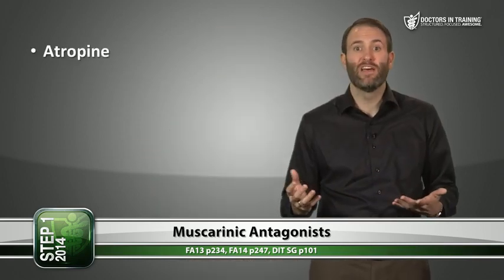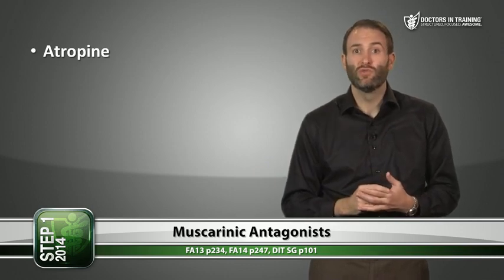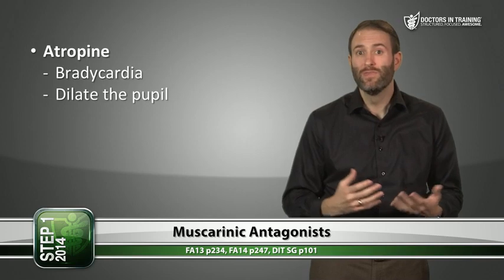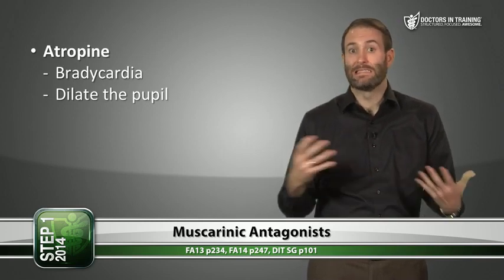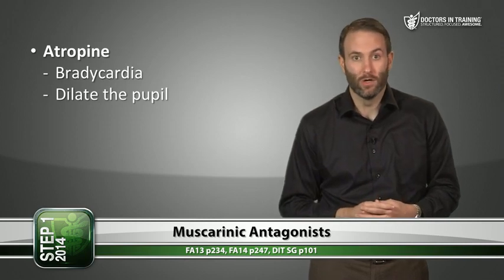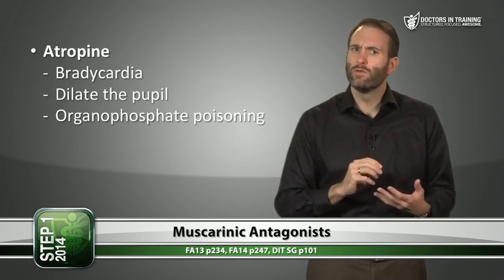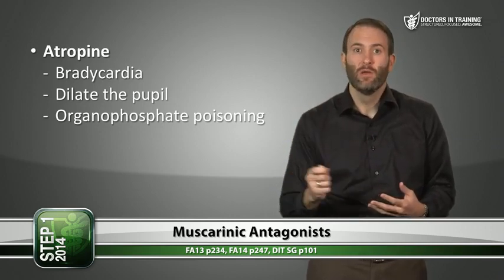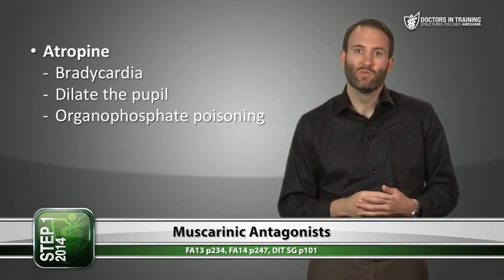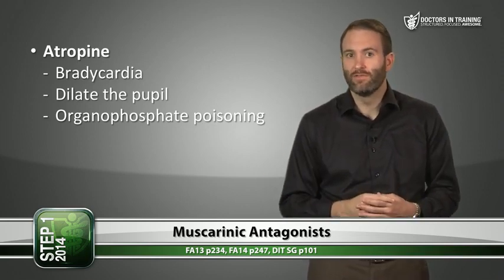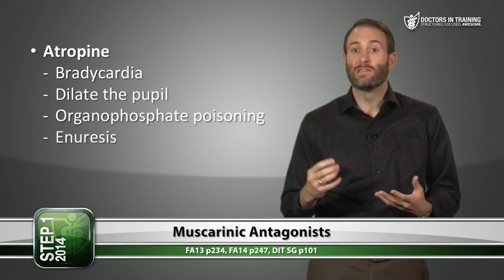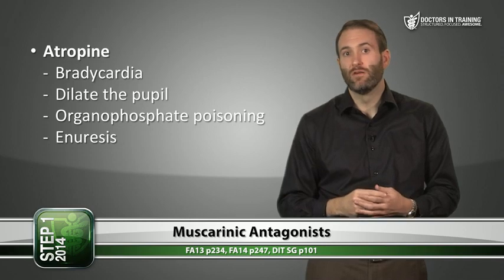What drugs inhibit parasympathetic activity? Let's go through the muscarinic antagonists and their uses. The prototypical muscarinic antagonist is atropine, which has many anticholinergic effects. Clinically it's used to treat bradycardia. In the past it was used to dilate the pupil, but we now have newer shorter-acting drugs. Atropine is still used to treat organophosphate poisoning — the other medication used there is pralidoxime, which regenerates acetylcholinesterase to break down excess acetylcholine in the synaptic cleft. Atropine was also used for enuresis in children, but we have better drugs now.